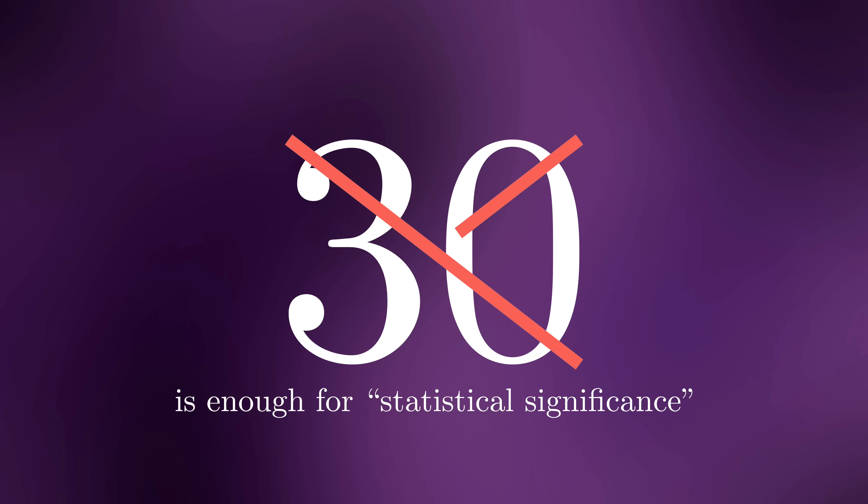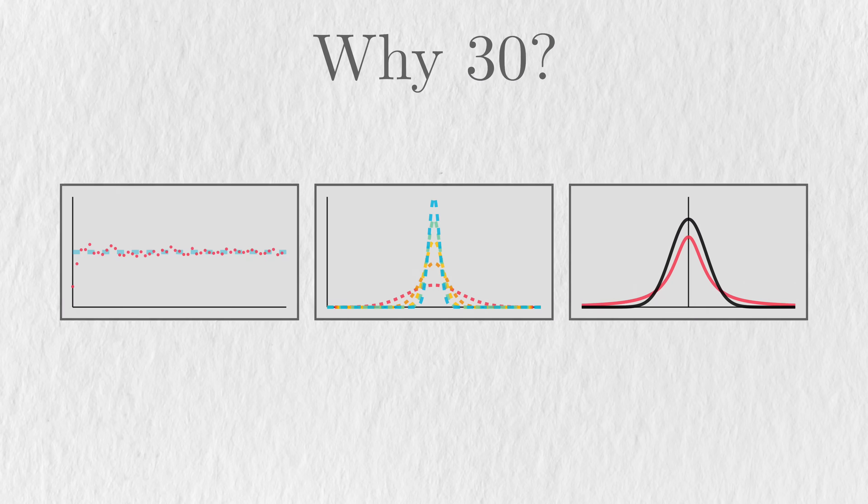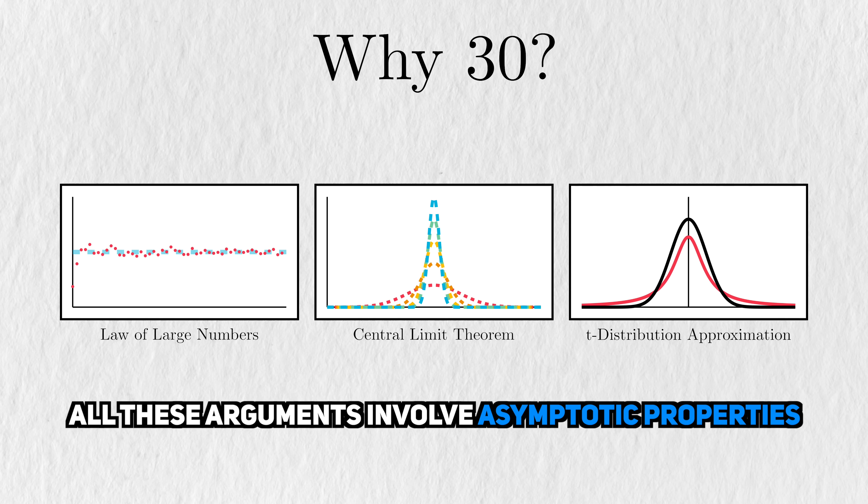I hope it's clear by now that the number 30 does not have any magical statistical properties. A recurring theme across these three arguments is that they involve asymptotic properties, sample sizes that approach infinity. I view 30 as a sort of compromise between this technical mathematical condition and something that's actually doable to real-world practitioners.